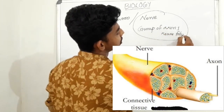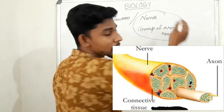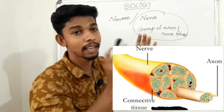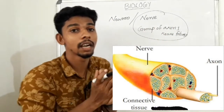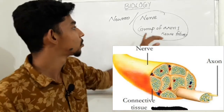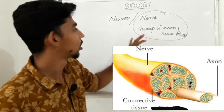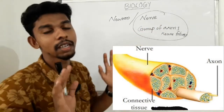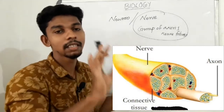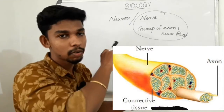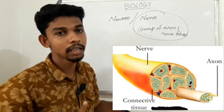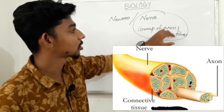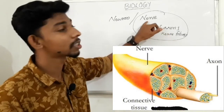Nerve fibers. The nerve is formed from axons. A neuron is a single cell with an axon. If we have a few axons, we can group them together.